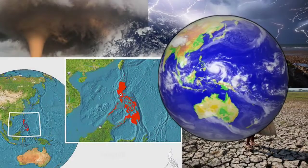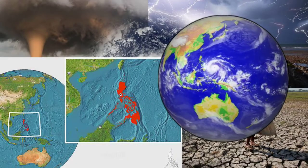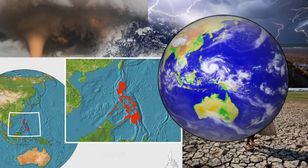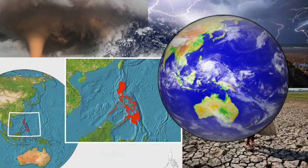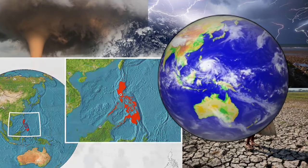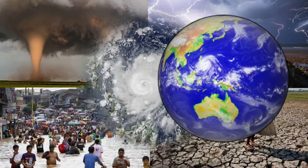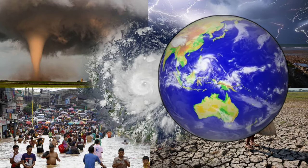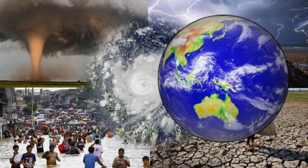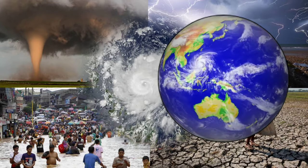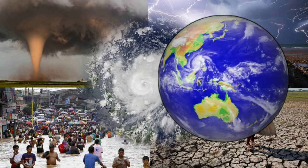The Philippines is located along a typhoon belt, or the so-called Pacific Ring of Fire. It has suffered from a countless number of deadly typhoons, earthquakes, and other natural disasters. All these natural disasters are hazards that our country has experienced.